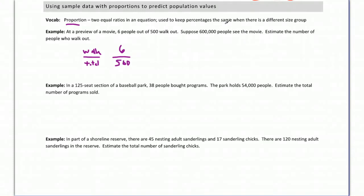Suppose 600,000 people see this movie. Estimate the number of people who walk out. So what we're going to do is set this equal to another fraction and have the number of people who walk over the total. Well, we know we have a total of 600,000, but how many people walk out? That's what we're trying to figure out. So we're going to call that our good old x. So back to our quality algebra again. So we have this proportion here: 6 over 500 equals x over 600,000.